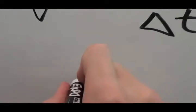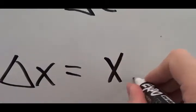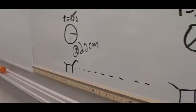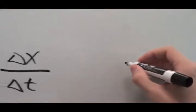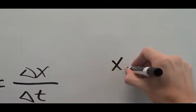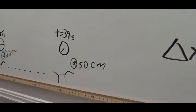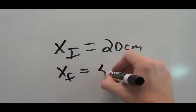To find delta x, or the displacement, we have to know the final position and take away the initial position. If we look over here, his initial position was at 20 centimeters, so let's go up here and zoom out a little bit. Let's say his initial position was 20 centimeters, his final position was 50 centimeters.